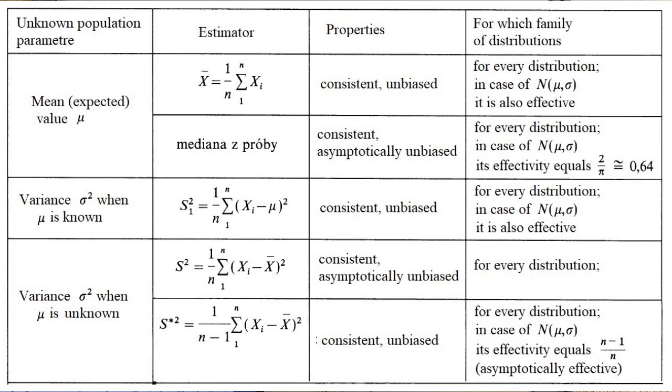But it's not the only way we can estimate mu. We also can estimate mu taking the median, the median of the sample. Now, what are the properties that we obtain? Then we obtain consistent estimator and which is asymptotically unbiased, meaning if n is very big, it is unbiased. Now, for which family? For any family of distributions. And for the normal distribution of the parameters mu and sigma, its effectiveness is about 2 over pi, which is about 0.64. 0.64 is a little bit close to 1, but it's not 1. 1 being the best, just effective estimator.